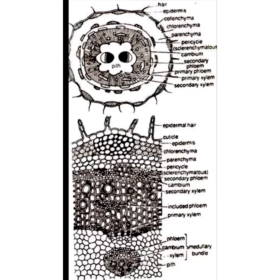The transverse section is wavy in outline with ridges and furrows and reveals the following tissues from outside. First one is the epidermis — you can see it is single layered, consists of tubular cells and is covered externally by a thick cuticle. From some cells arise multicellular hairs as well, which you can see arising from the epidermis.